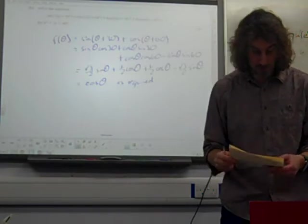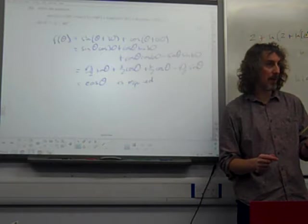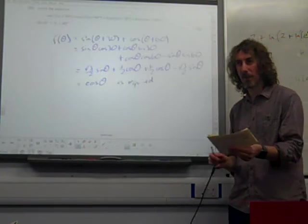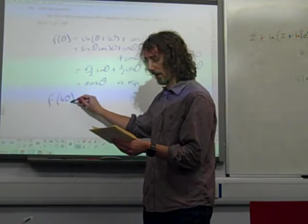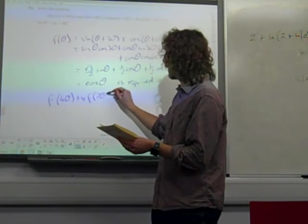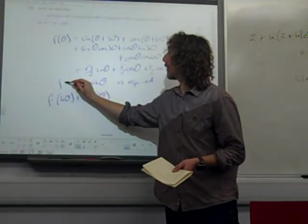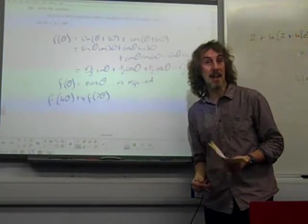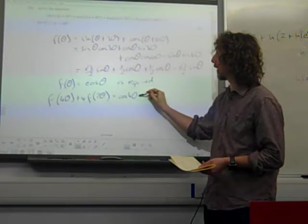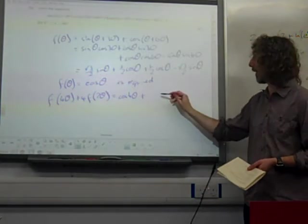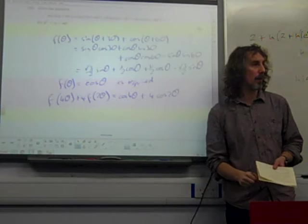Now, part B said, hence, show that f of 4 theta plus 4f of 2 theta is equal to that thing there. This is massive, this second part of this question, and it's going to get really messy. f of 4 theta plus 4f of 2 theta. We've got that f of theta is cos theta. That's crucial. That's the hence bit, so we're going to have to use that. So f of 4 theta is cos 4 theta. 4f of 2 theta is 4 times cos 2 theta.